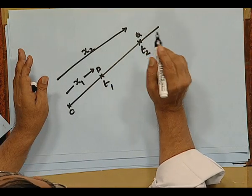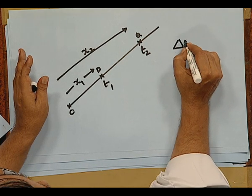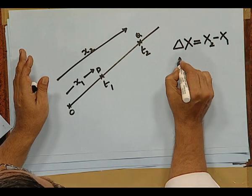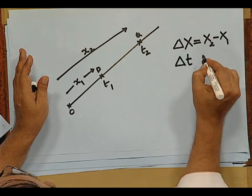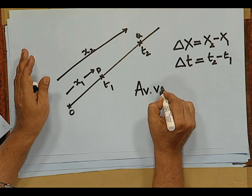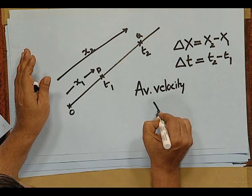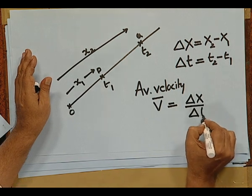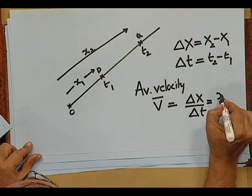When position goes on changing with time, say in the interval from T1 to T2, the object's position has changed from x1 to x2. Then the change in position, which is represented as delta x — which represents x2 minus x1 — has occurred in a time interval represented by delta T, which is T2 minus T1. We define a quantity called average velocity for this interval: average velocity v̄ = delta x by delta T, that is (x2 − x1) / (T2 − T1).